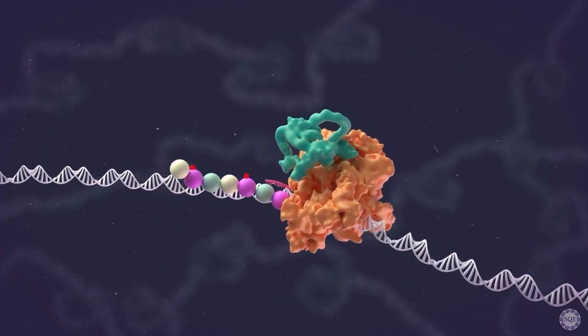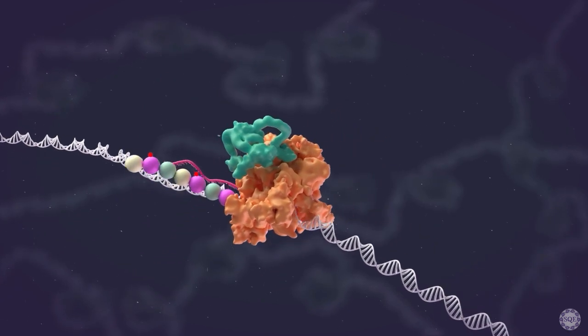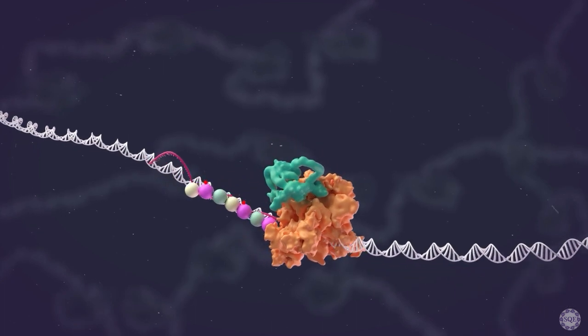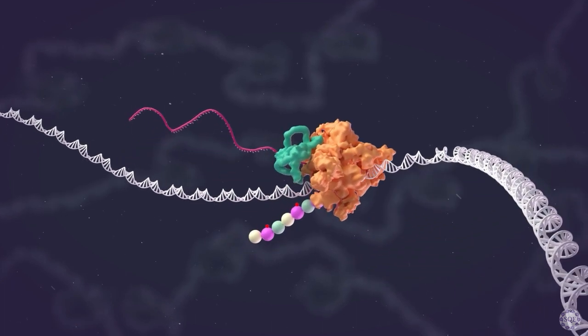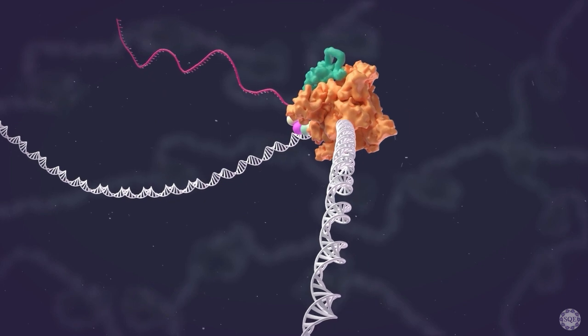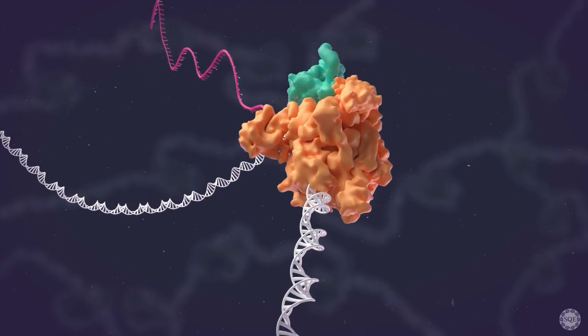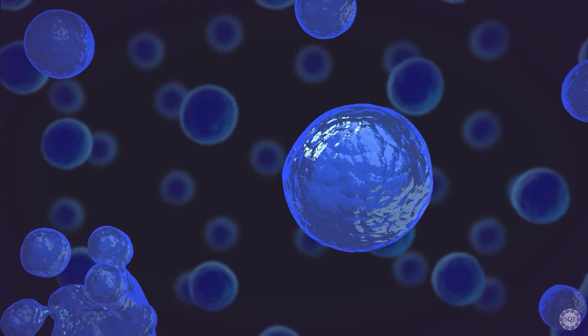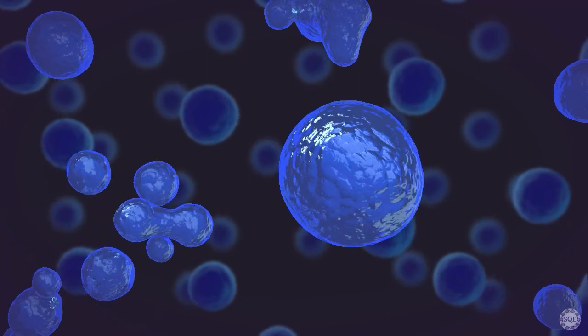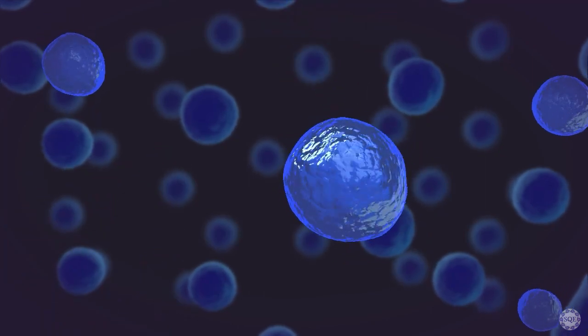This drives the expression of specific genes controlled at the level of elongation by ELOA3 that are involved in cell differentiation and cell cycle control. The function of these genes causes the cells to die in response to JQ1.